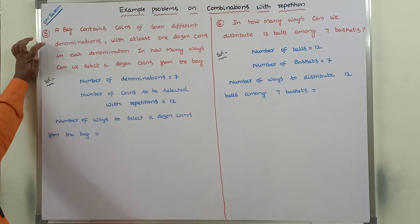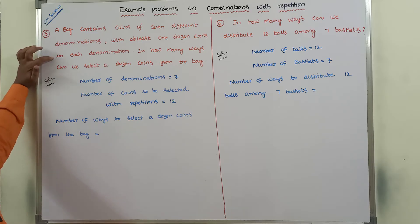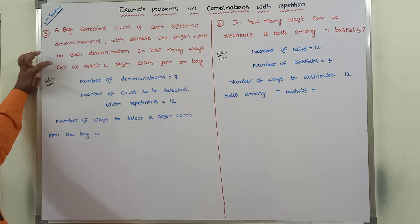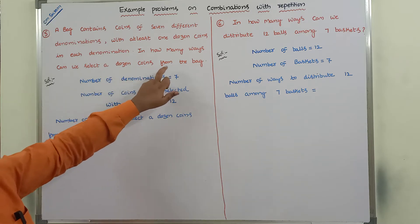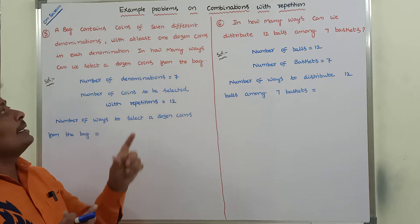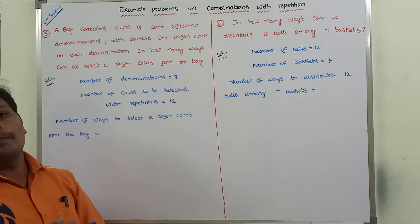First problem: a bag contains coins of seven different denominations with at least one dozen coins in each denomination. In how many ways can we select a dozen coins from the bag?